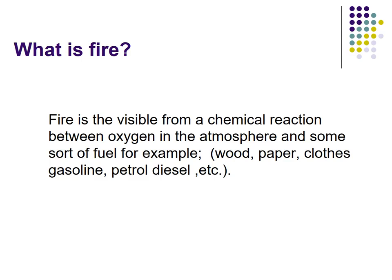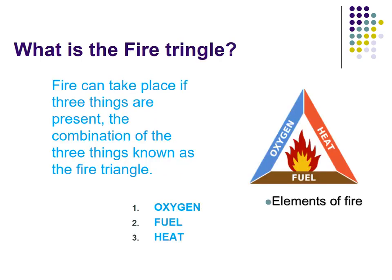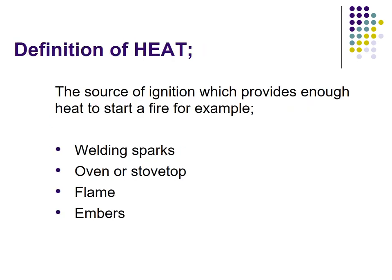For example, wood, paper, clothes, gasoline, petrol, diesel, etc. Fire can take place if three things are present. The combination of these three things is known as the fire triangle: oxygen, fuel, and heat. These are the elements of fire — if these three things are combined, then only fire can take place.